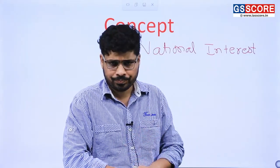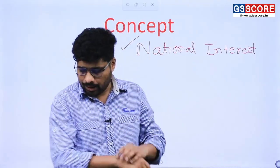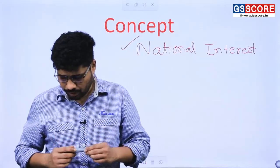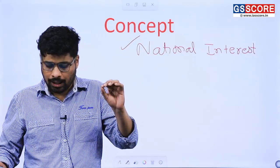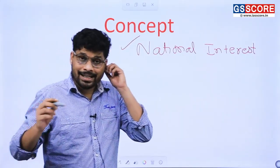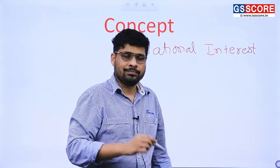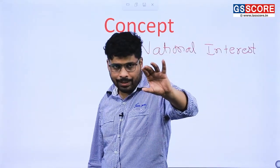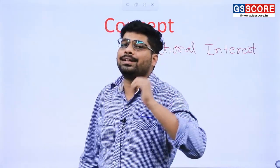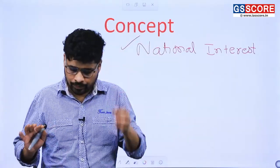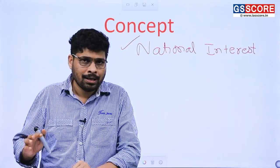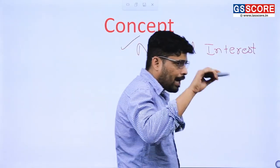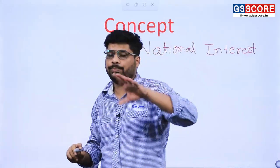To pin this question to a specific part of the syllabus, look at GS Paper 2 — the topic worded: 'Bilateral, regional and global groupings and agreements involving India and/or affecting India.' I2U2 is a grouping, India is part of it, and the effect it will have on India has to be understood.